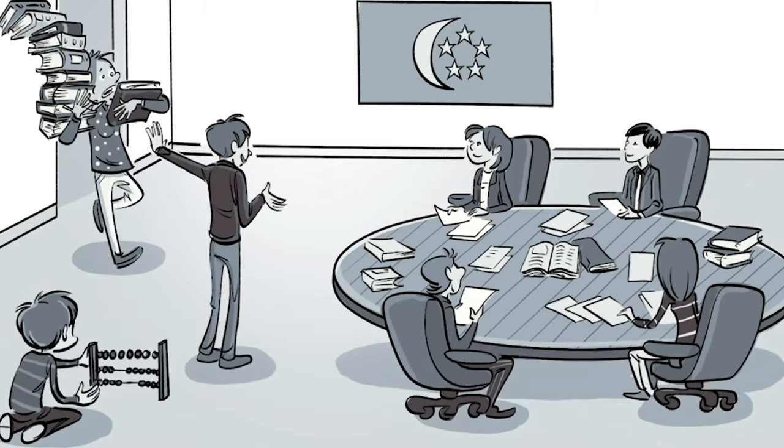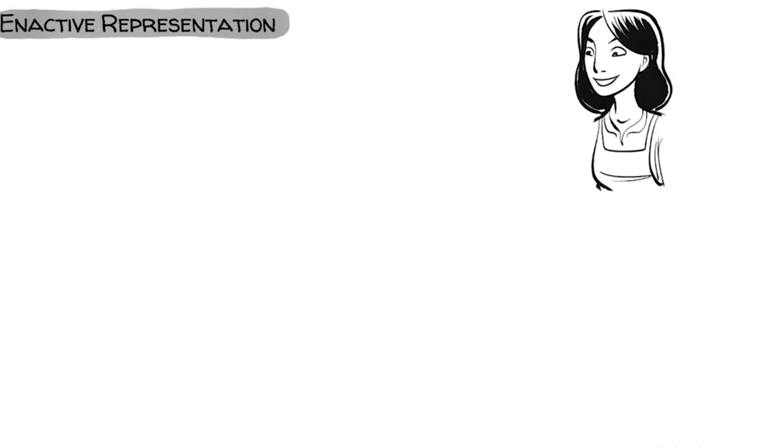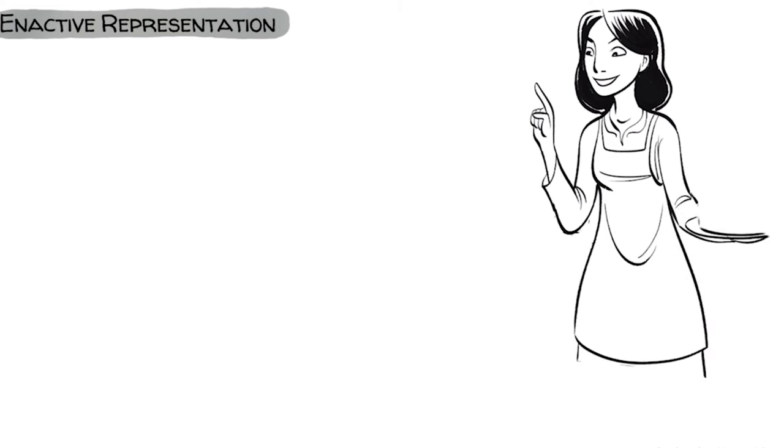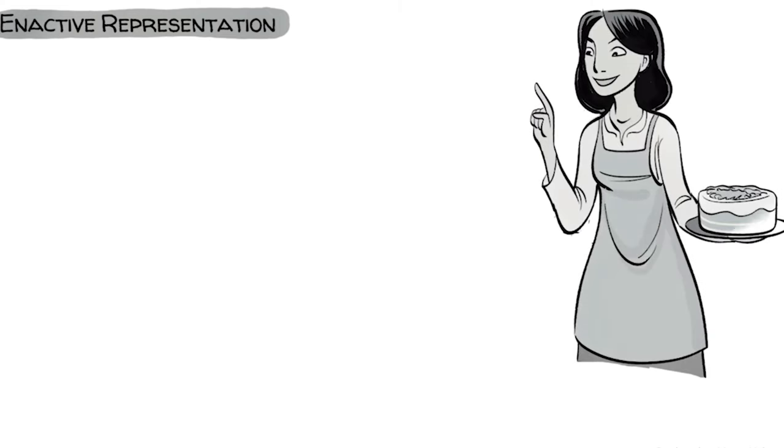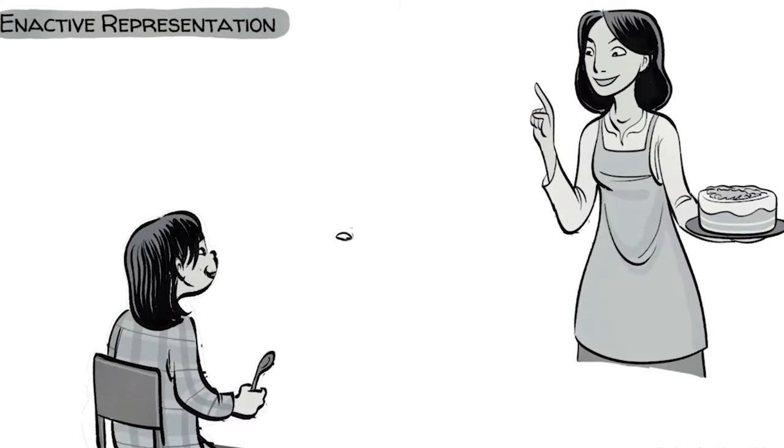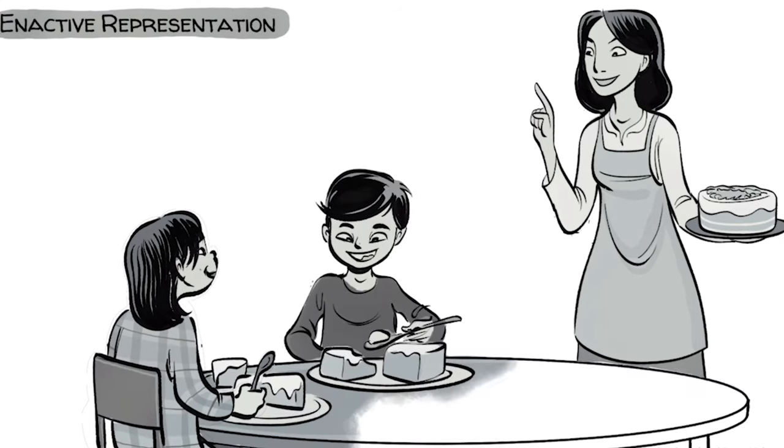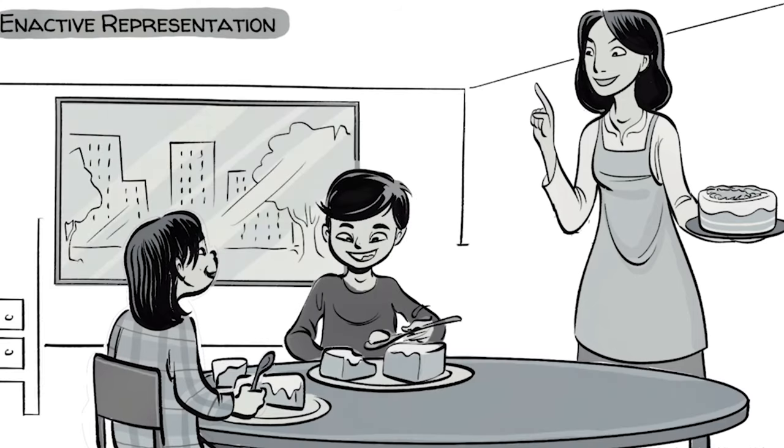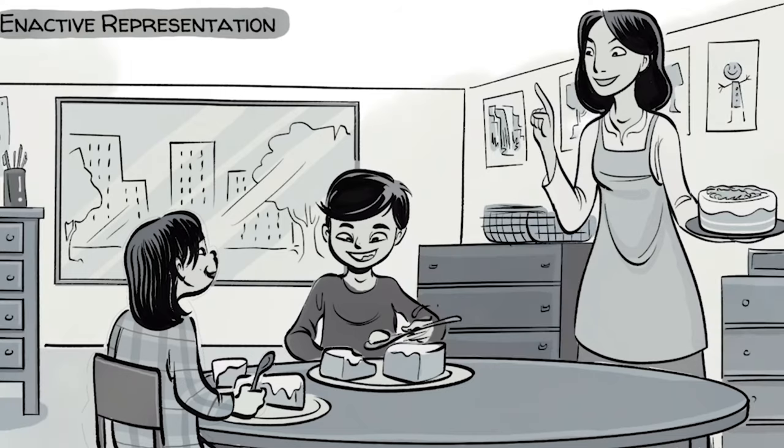First, we learn through enactive representation. This happens in hands-on experiences, ideally with real-world applications. To divide four by two, two students learn to cut a cake into four slices, so each can eat one now and bring one home later.